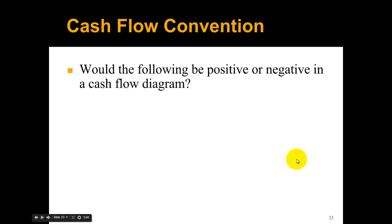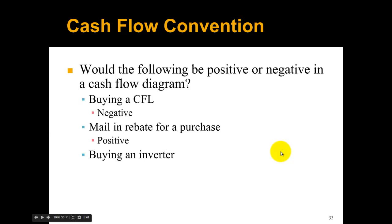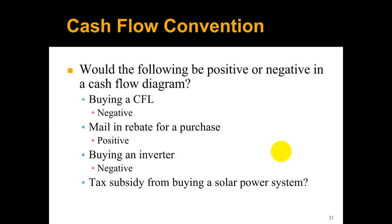Let's talk about whether the following examples would be positive or negative in a cash flow diagram. If you're buying a CFL, that's money leaving your pocket, so that would be negative. If you're mailing a rebate for a purchase, you're going to be getting money back, so that's positive. If you're buying an inverter for a solar power system, you're buying something and cash is leaving your pocket, so it's negative. If you're getting a tax subsidy from buying a solar power system, that's cash going into your pocket, so that's positive.